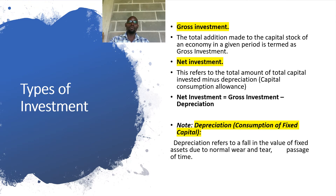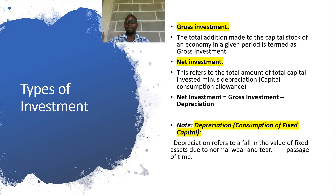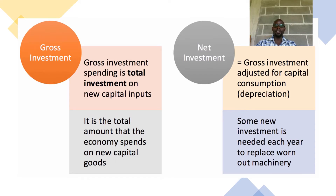When capital goods produce goods and services, in the process they lose value, and the money needed to replace that lost value is referred to as the capital consumption allowance. Gross investment spending is the total amount that the economy spends on new capital goods. Net investment is gross investment adjusted for capital consumption allowance. Some new investment is always needed each year to replace worn-out capital goods.